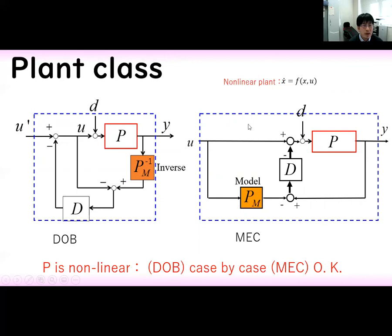Next, we show the case for non-linear systems. When the plant is given as a non-linear system, it is difficult to make an inverse system. So whether the disturbance observer works or not is case by case.